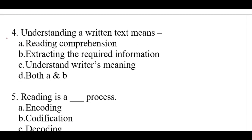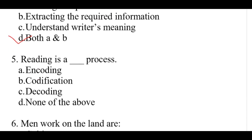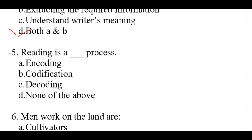Question number 4: Understanding a written text means. The right answer is option D: Both A and B — reading comprehension and extracting the required information. Question number 5: Reading is a decoding process. The right answer is option C: Decoding.